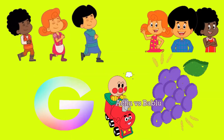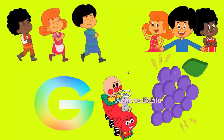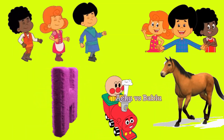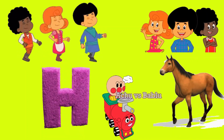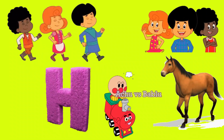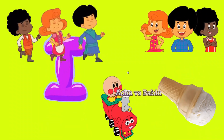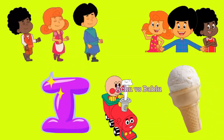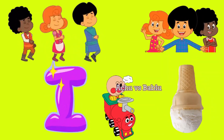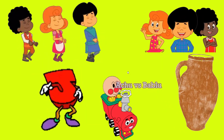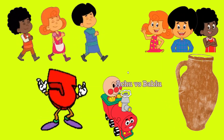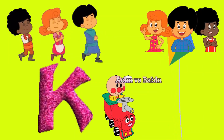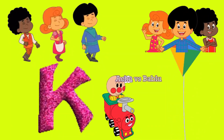G for Grapes. H for Horse. I for Ice Cream. J for Jack. K for Cake.